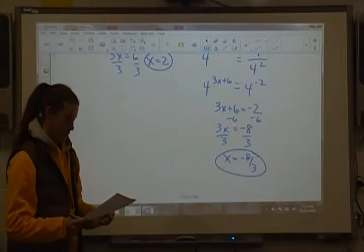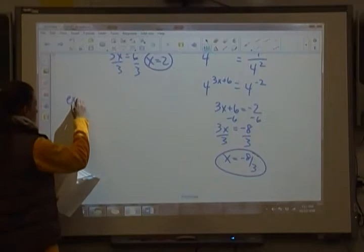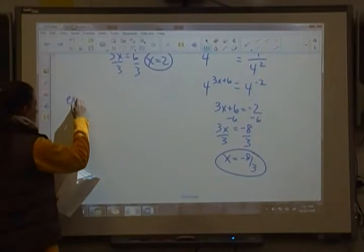All right. Let's do one more like that. Very similar to that. All right, example 5. So 2 to the 4x minus 6 equals 1 eighth. You need to change 8 into something with a base of 2. So 2 to the 4x minus 6 equals...